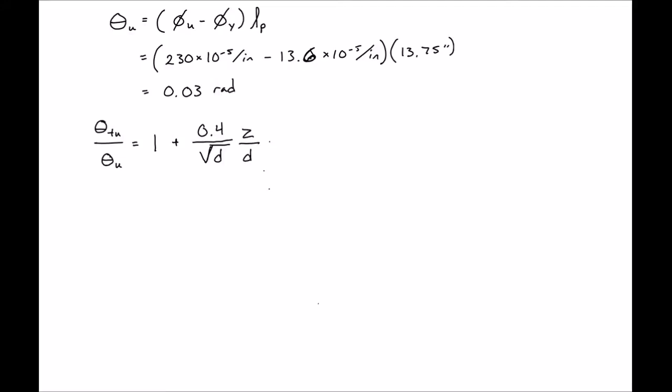Matic and Corley allow us to multiply our theta sub u by this factor which is 1 plus 0.4 divided by square root of d times our z which is 5 feet times 12 inches per foot divided by our d again 21.5 inches. So we'll get this to be 1.24. So we'll get about a 24 percent increase from our theta u from before. We'll find our theta sub tu to be equal to 0.0372 radians.